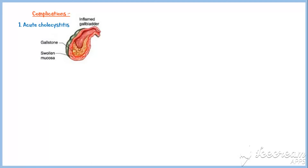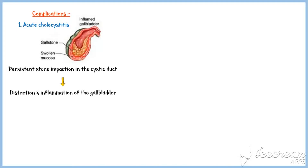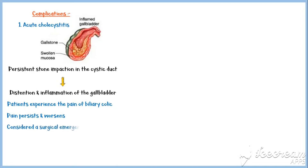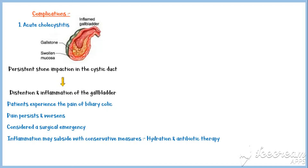Gallstone disease is associated with several complications. Acute cholecystitis, or inflammation of the gallbladder, is one of the major complications. It occurs when gallstones persistently impact the cystic duct, causing the gallbladder to become distended and inflamed. Patients experience biliary colic pain that, instead of resolving spontaneously, persists and worsens over time. Acute cholecystitis is considered a surgical emergency, although inflammation may subside with conservative measures such as hydration and antibiotic therapy.